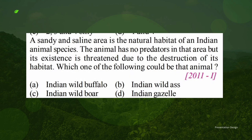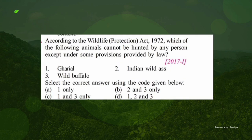Question 2: A sandy and saline area is the natural habitat of an Indian animal species. The animal has no predators in that area, but its existence is threatened due to habitat destruction. Which animal is this? It's a clear question — we are talking about the Indian wild ass.